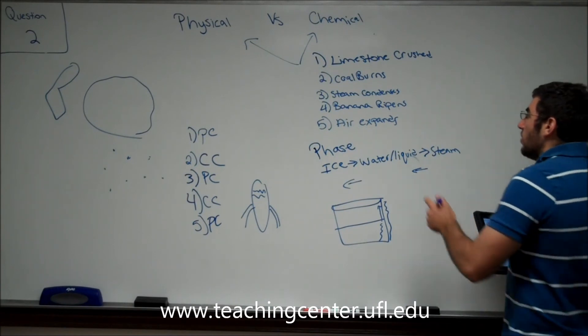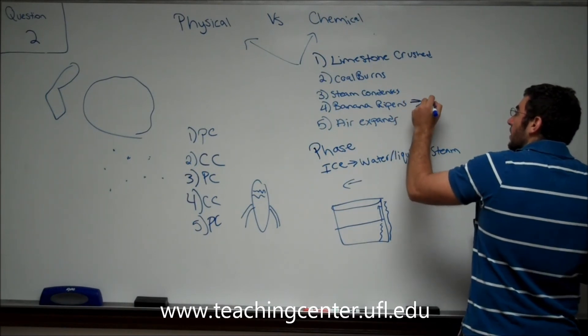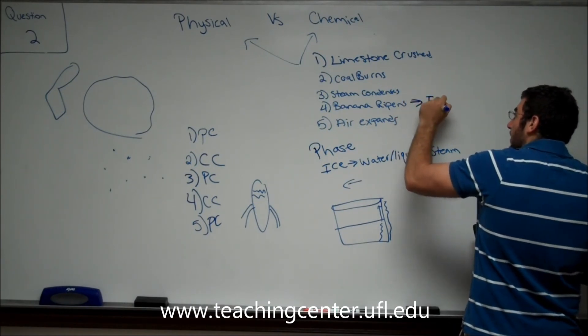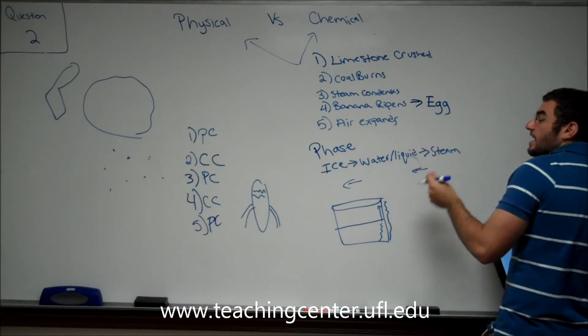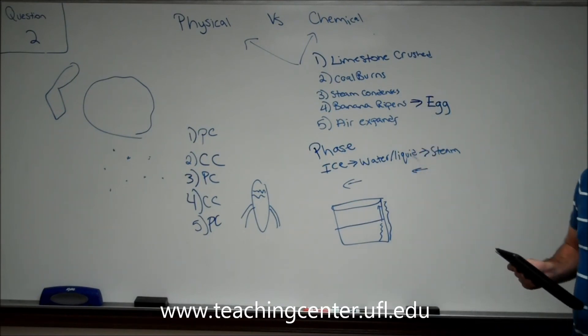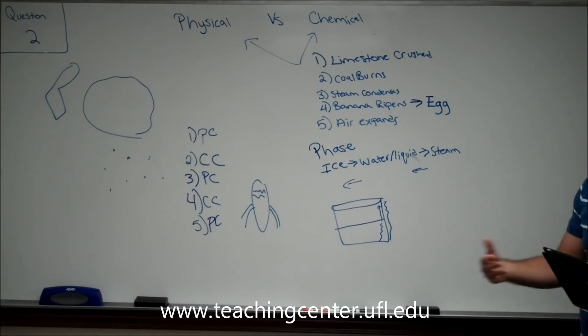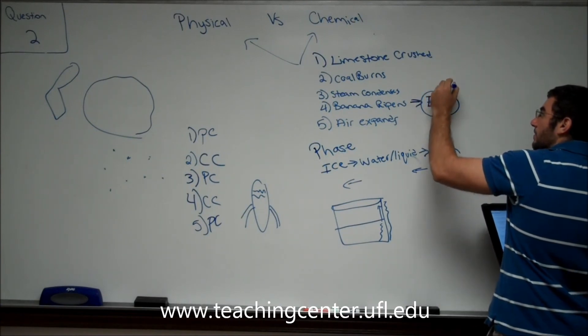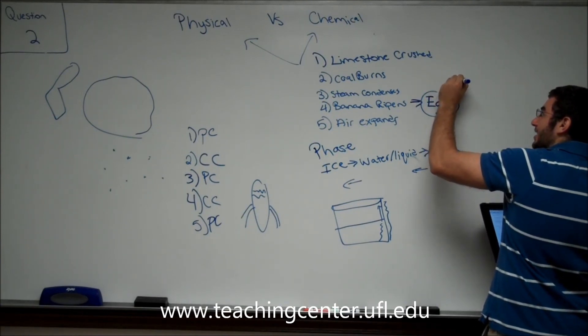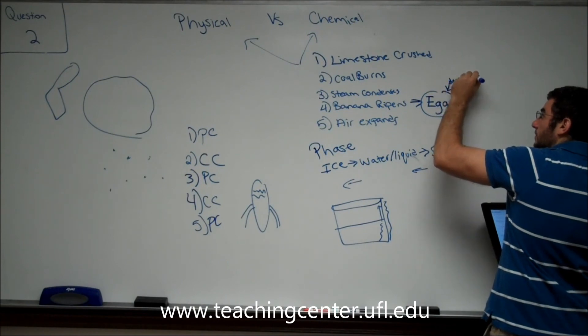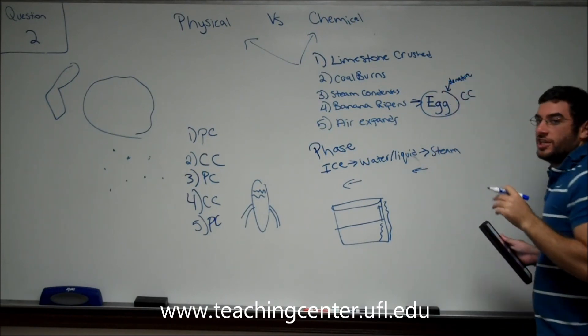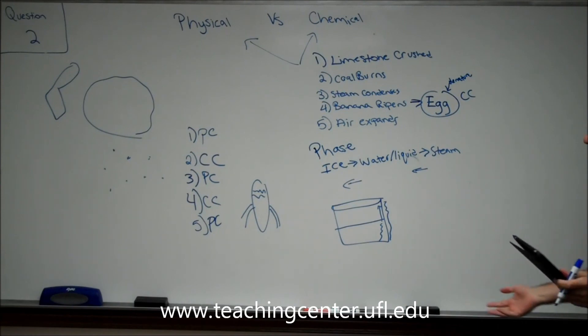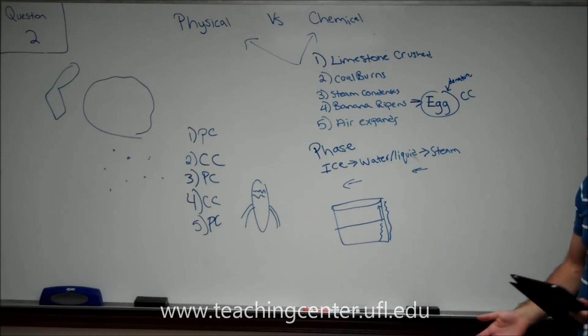Number four, banana ripens. Also, on your test, maybe you will see cooking an egg. Cooking an egg is the same as if a banana ripens. Once you cook that egg, you can never go back to have a raw egg. So if you see an egg, or maybe they say denaturing an egg on your test, think chemical change. And the last one, air expanding and compressing, is just, once again, any gas, and that is a physical change.